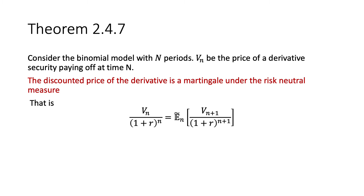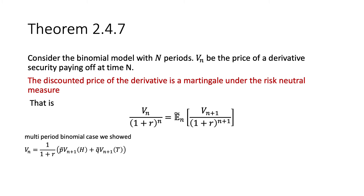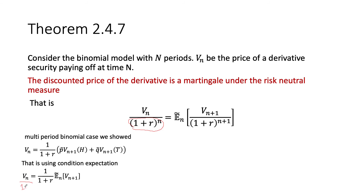If V_n is the price of the derivative security, then the discounted price of the derivative is also a martingale under the risk-neutral measure. In the multi-period case, using conditional expectation, we showed that a certain relationship must hold. We then divide both sides by (1+r)^{n+1}, which allows us to show that this martingale relationship holds — meaning the discounted price of the derivative is a martingale under the risk-neutral measure.